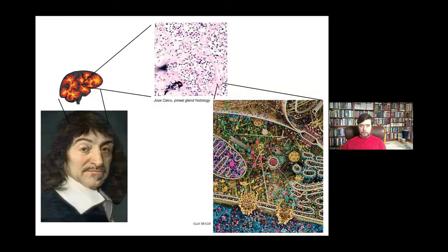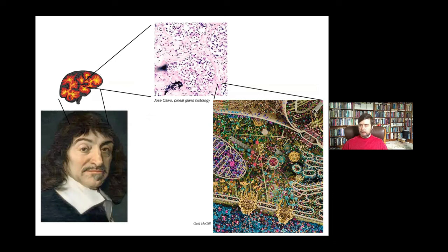In fact, Descartes was really into the pineal gland because there was only one of them in the brain, and he felt that the unified character of human experience required a singular structure in the brain to mediate it. But if he had had access to good microscopy, what he would have seen is that actually there's not one of anything — inside that pineal gland is this — there are many, many cells, and inside each of those cells there's all of this stuff. The tremendous complexity — and this is by no means all.